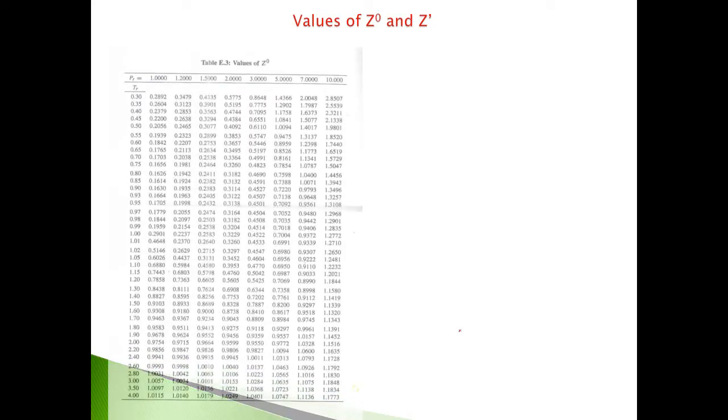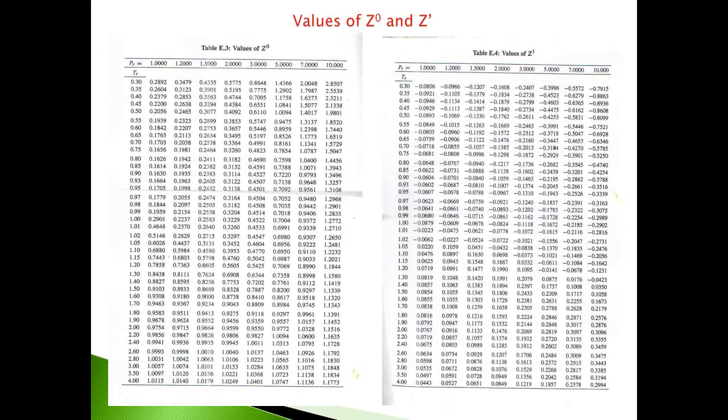This is the table of Z naught on the left side and Z1, or Z prime, on the right side. It's a function of PR and TR—these are the different reduced pressures and reduced temperatures.